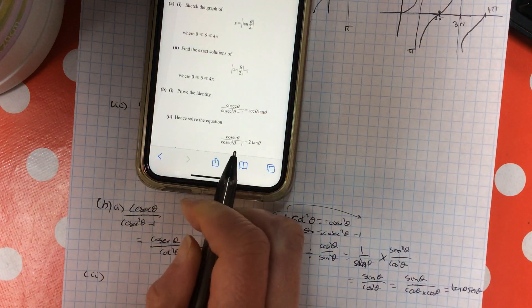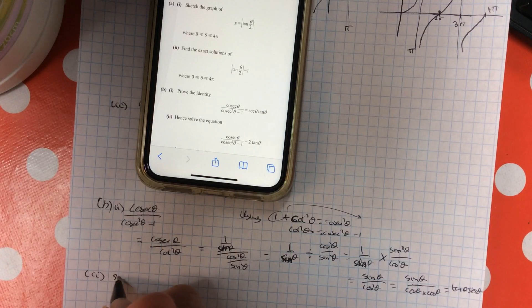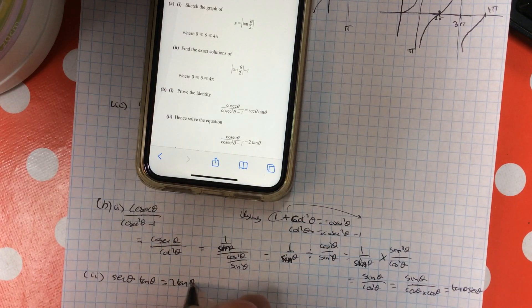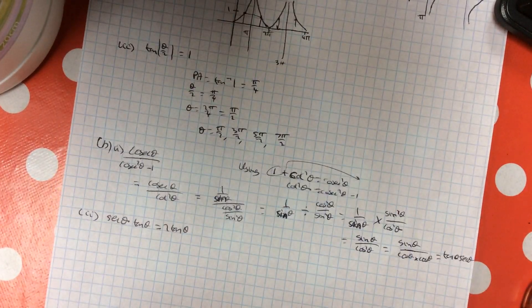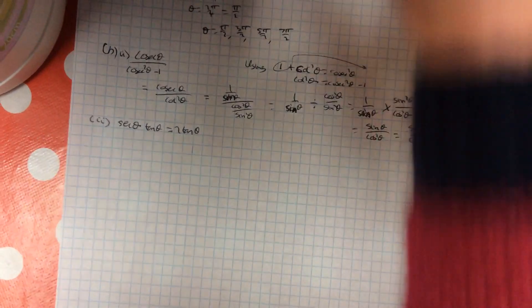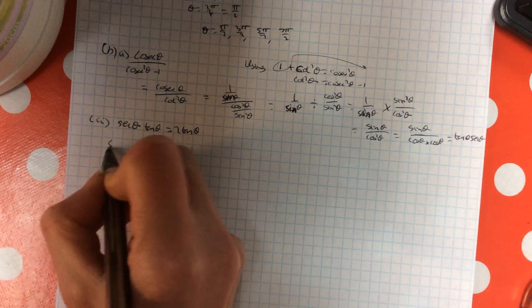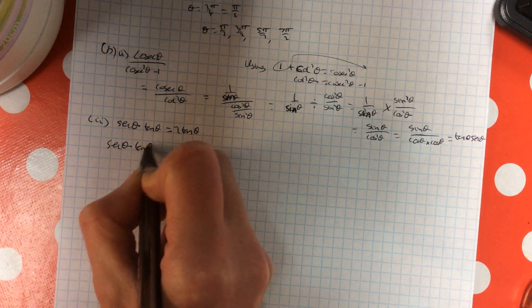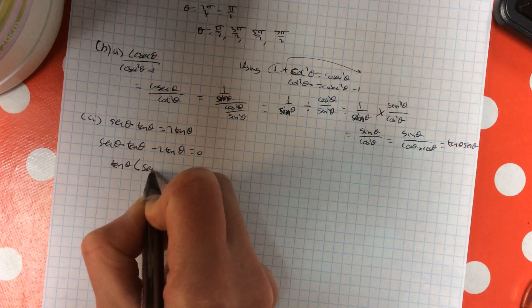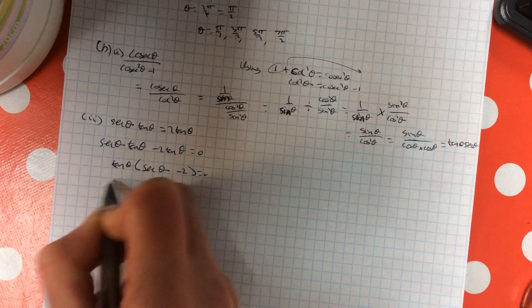Hence, solve this equation. So I'm going to take my answer from up here: sec theta tan theta equals 2 tan theta. Straightforward question here to solve. And I am between minus pi and 0. So first of all, bring everything onto one side: sec tan minus 2 tan equals 0. Factor out the tan, so tan times sec minus 2 equals 0.